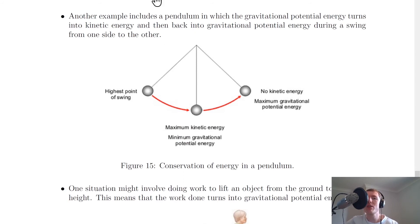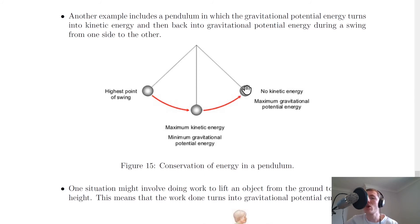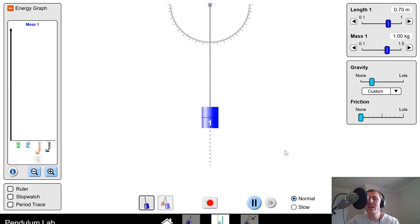Another example is the motion of a pendulum. The gravitational potential energy turns into kinetic energy and then back into gravitational potential energy during a swing from one side to the other. At its highest point the pendulum has maximum gravitational potential energy; at the lowest point of its swing it has maximum kinetic energy and minimum gravitational potential energy; and at the other end of its swing it has maximum gravitational potential energy again and zero kinetic energy.